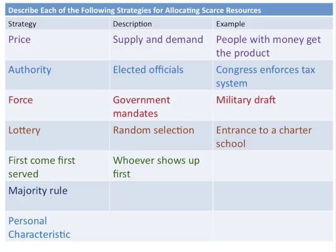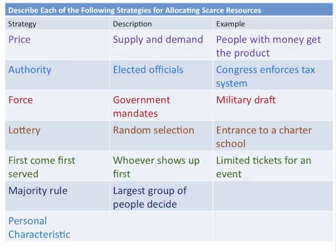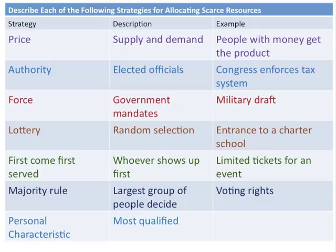In a democratic republic, majority rule decides who gets the stuff — who becomes president, what decisions are made at the state level. Personal characteristics also determine allocation; for certain schools or universities, the most qualified individual gets into the program. As a result of scarcity, personal characteristics are often how we determine who gets scarce resources.